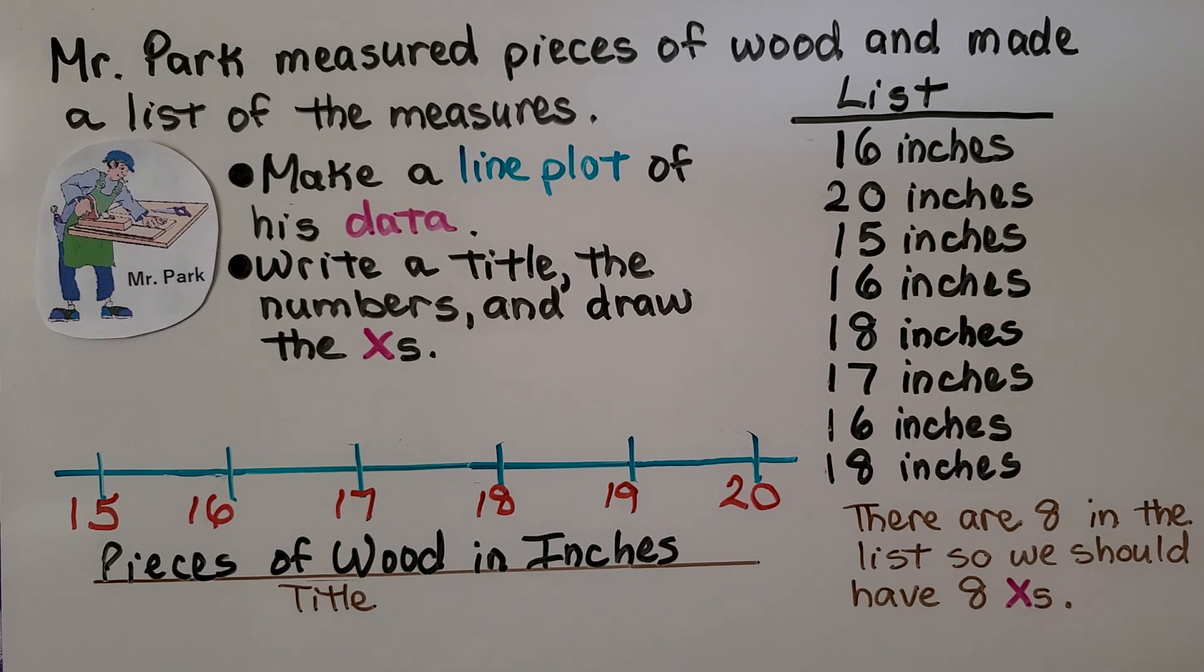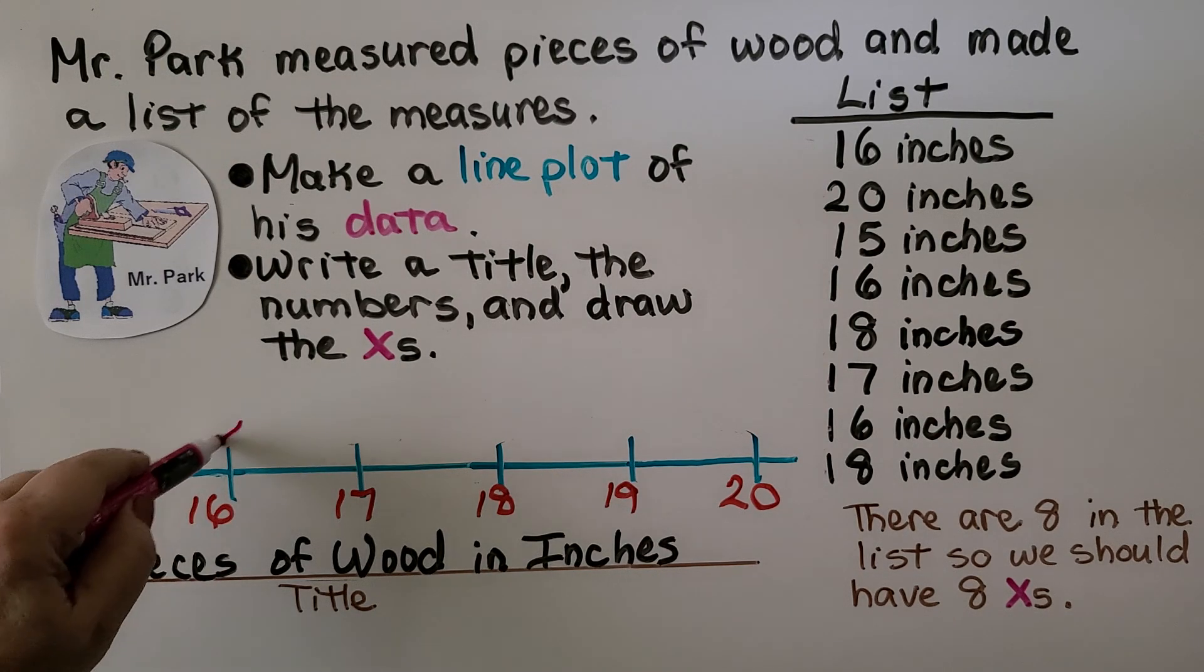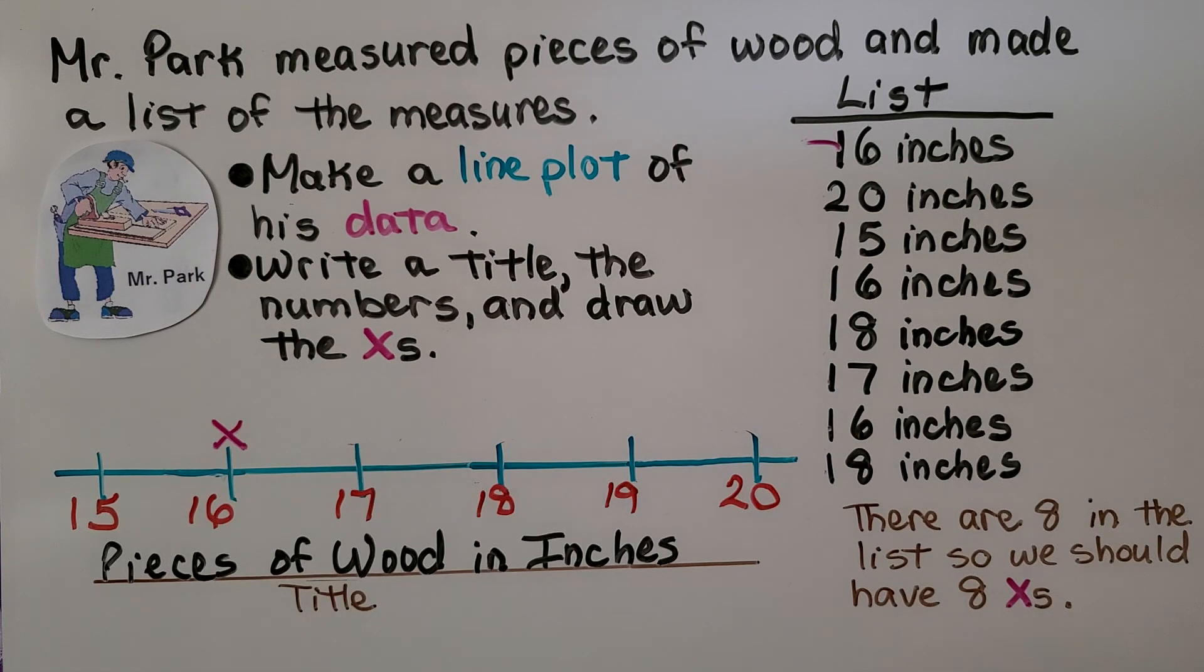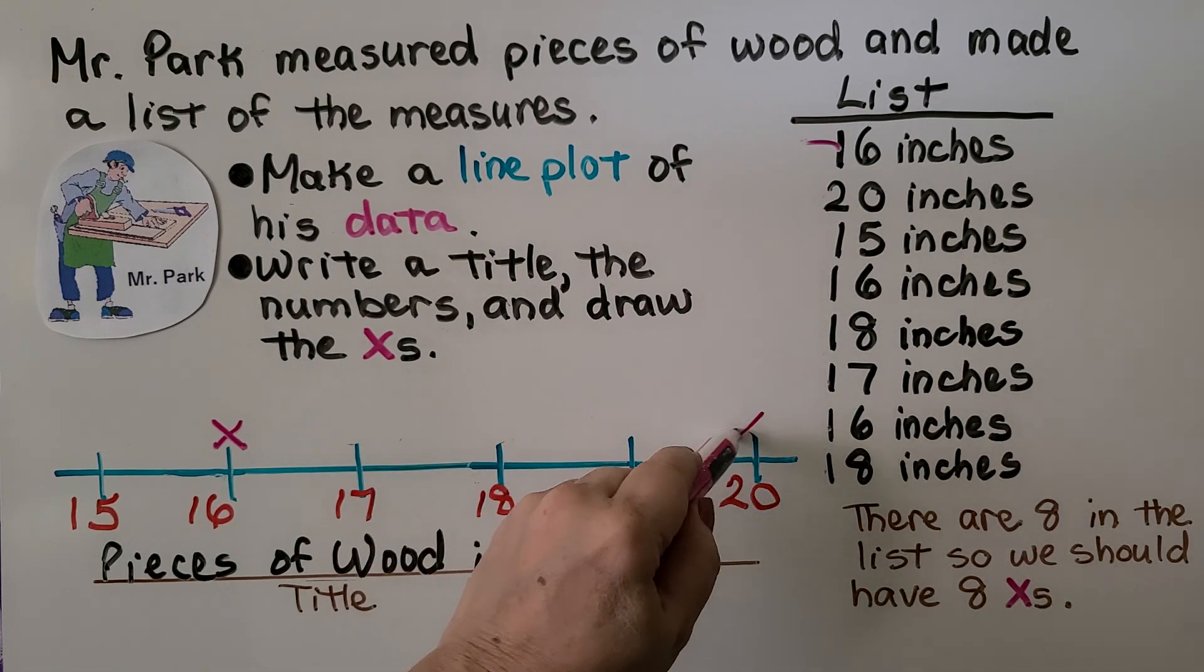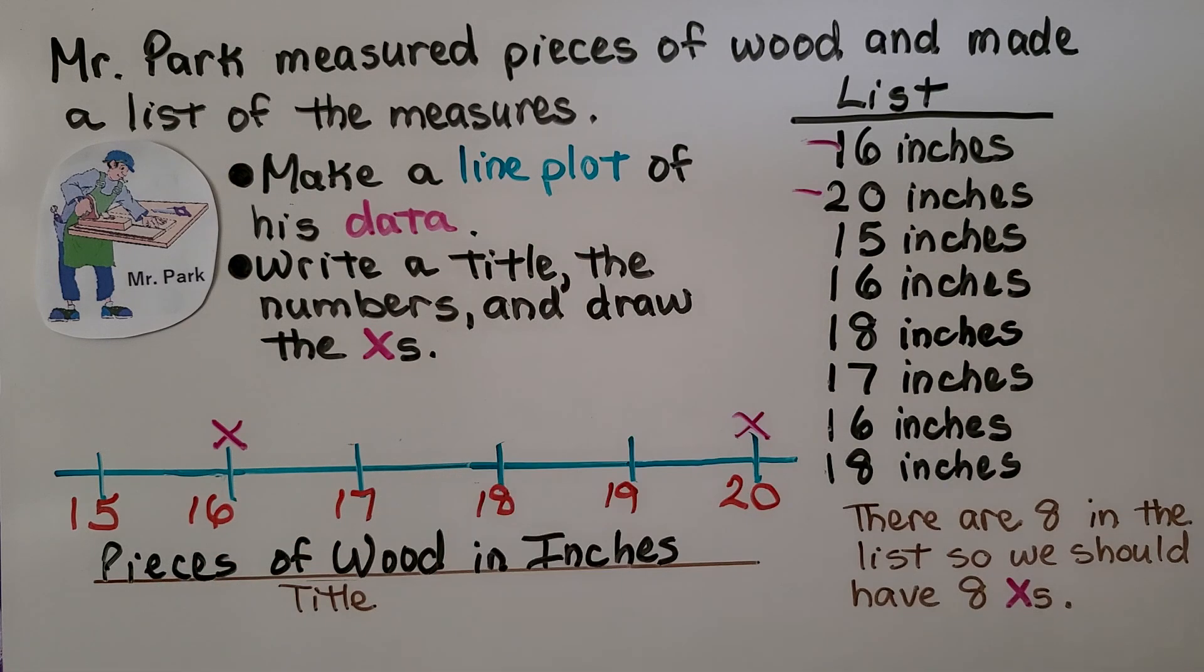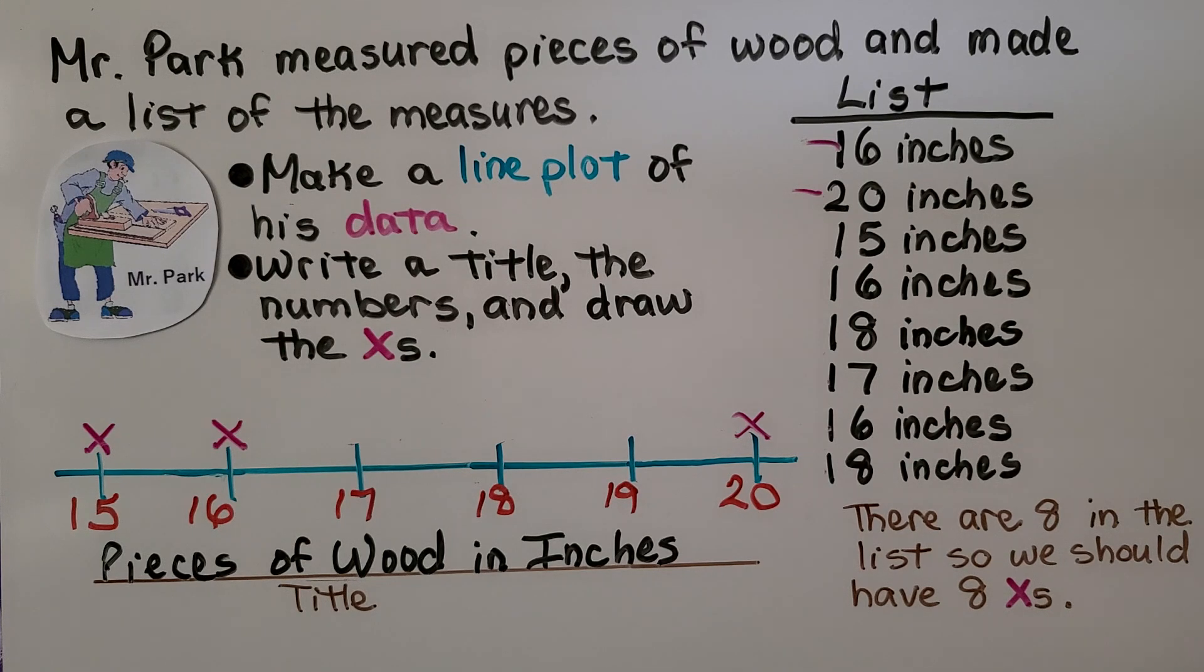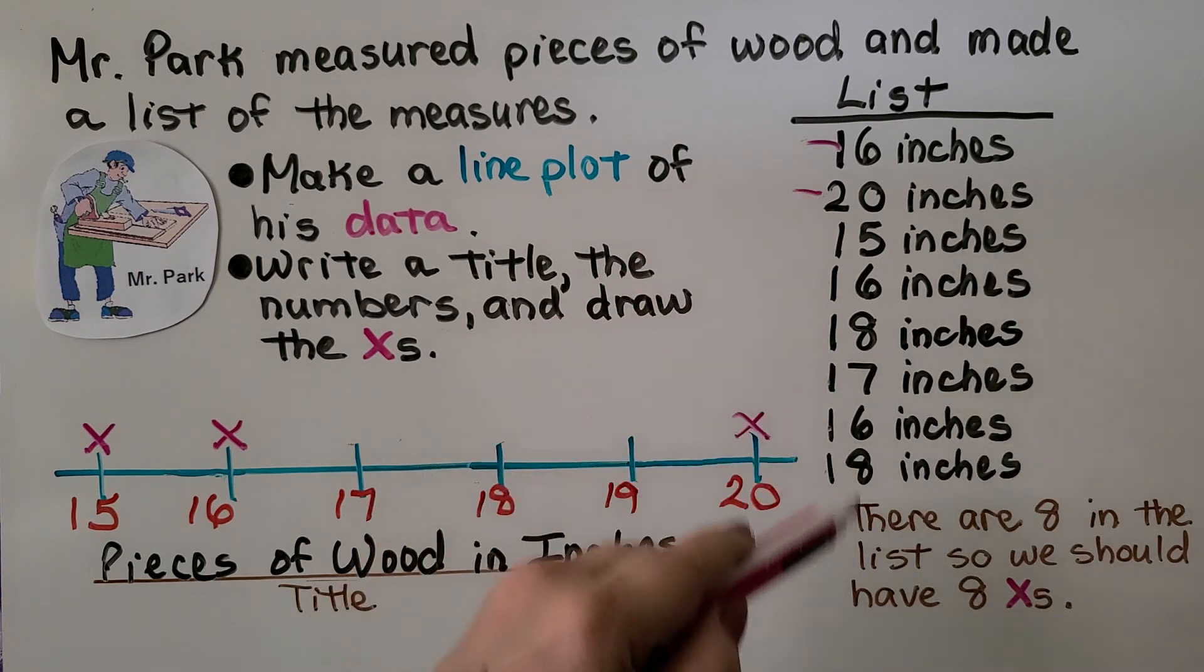Now what we do is we start at the top of the list and we see we have a 16 inch. So I'm going to put an x over the 16 inch. We can mark this that we did it. We have a 20 inch, we can put an x over that. Mark that we did that one. Now we have the 15 inch, we put an x over that one. Do you notice I'm not doing them in number order? I'm just doing them going down the list.